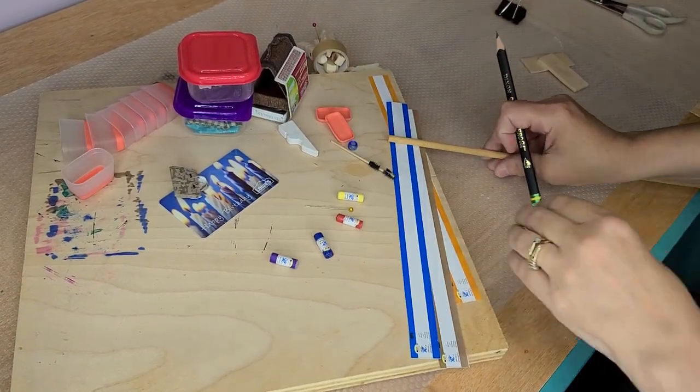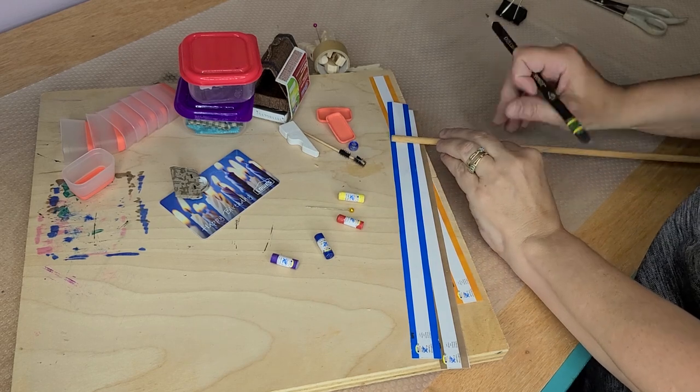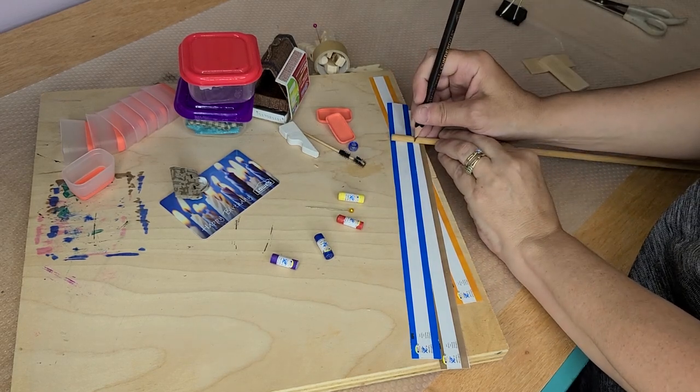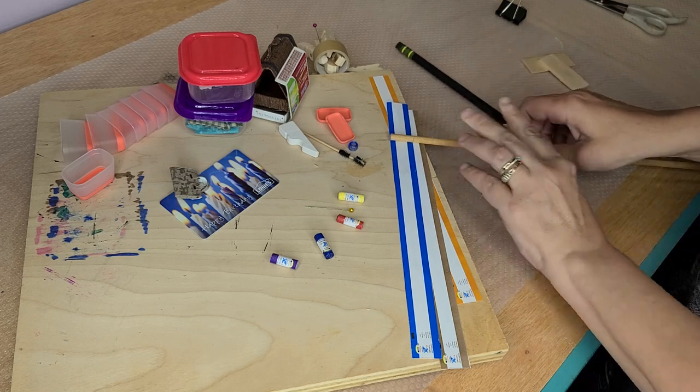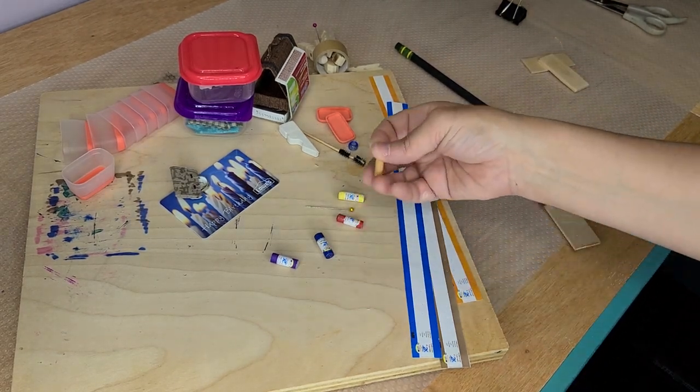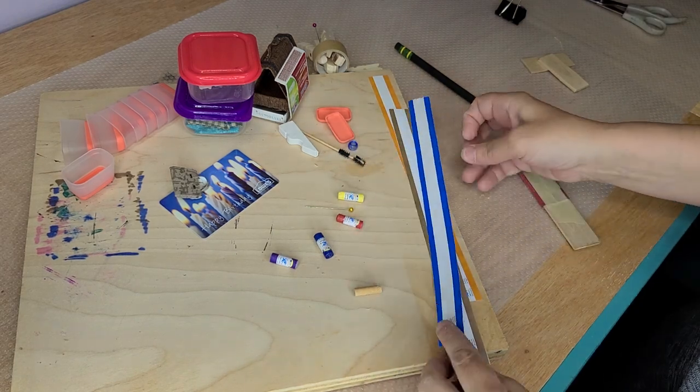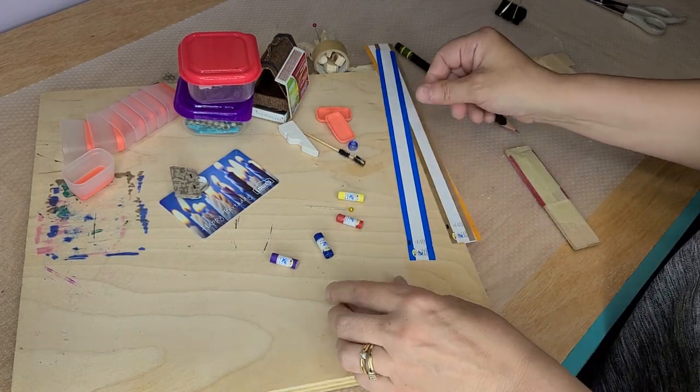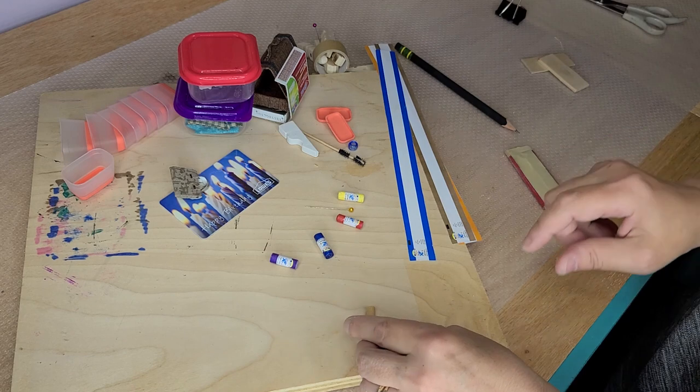Now option two is the wooden dowel. What you want to do is you want to go ahead and mark your line and then cut it off. If you're going to do the wooden dowel instead of the little skewer or toothpick, then what you need to do is you need to take the glue and put a little bit on your dowel.